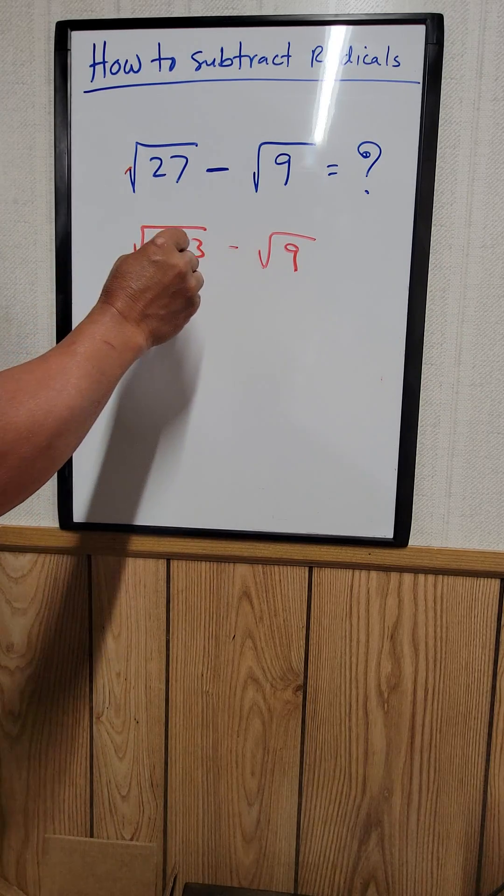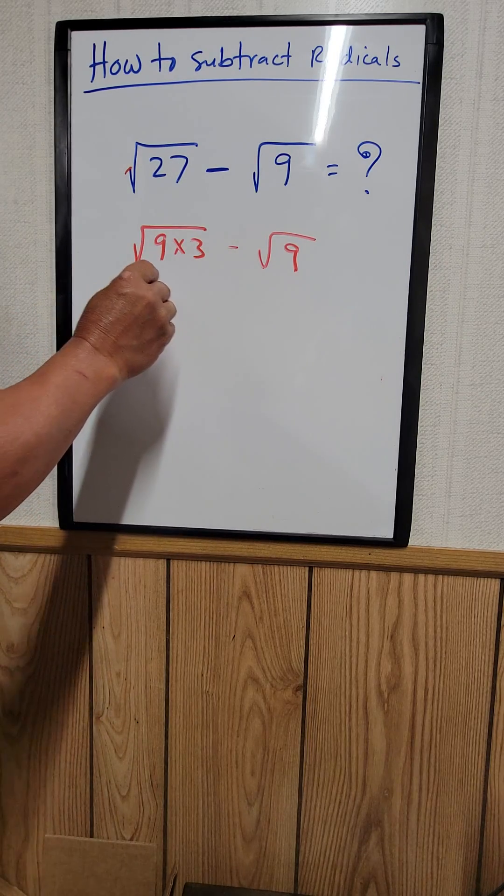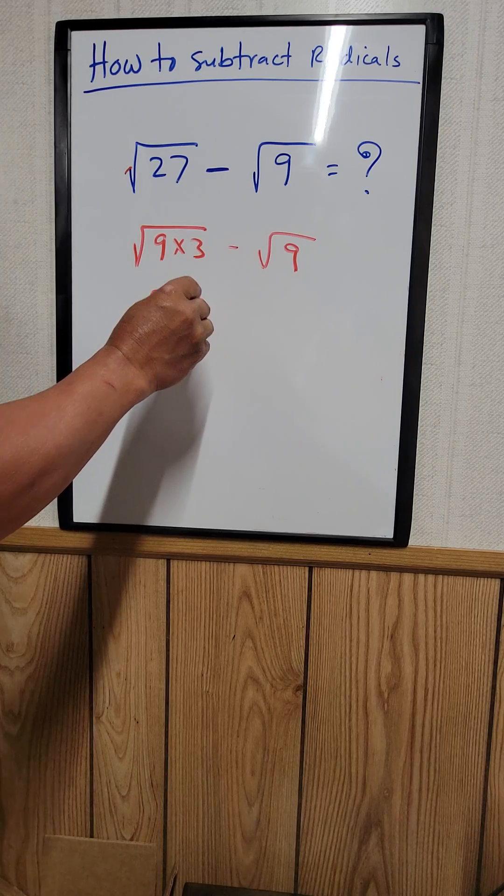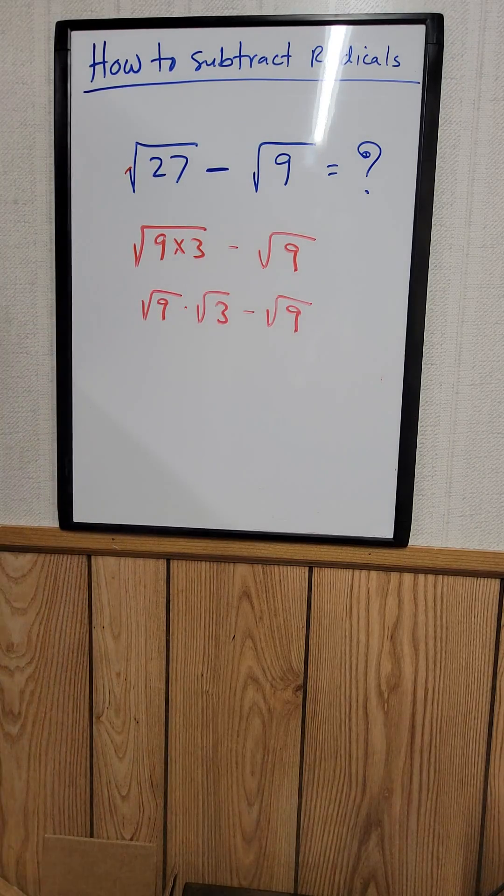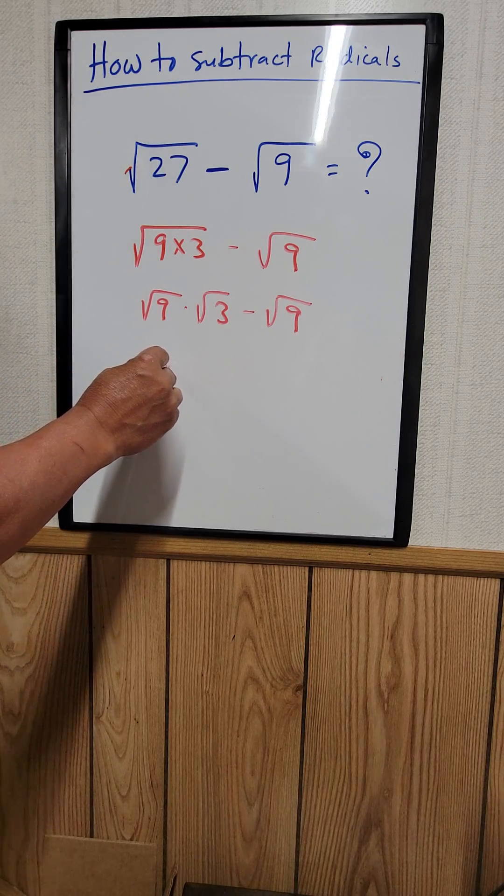And then we can break this further down as the square root of 9 times the square root of 3 minus the square root of 9. And you know that the square root of 9 is just a perfect square. It's just equal to 3.